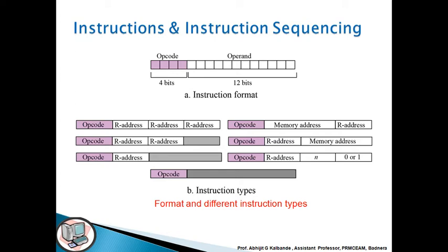After that, instruction types. Here you can see that in instruction types there are the first one, the first three byte instruction, that is the three address is given, then two address instruction, single address instruction.